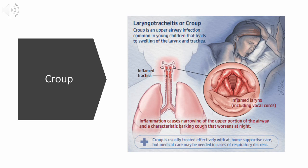Croup refers to infection of the upper airway which obstructs breathing and causes a characteristic barking cough, typically found in infants and young children. The signs and symptoms result from swelling around the larynx, the trachea, and the bronchi. When a cough forces air through the narrowed passageway, swollen vocal cords produce a noise similar to a seal barking. Taking a breath often produces a high-pitched whistling sound known as stridor.